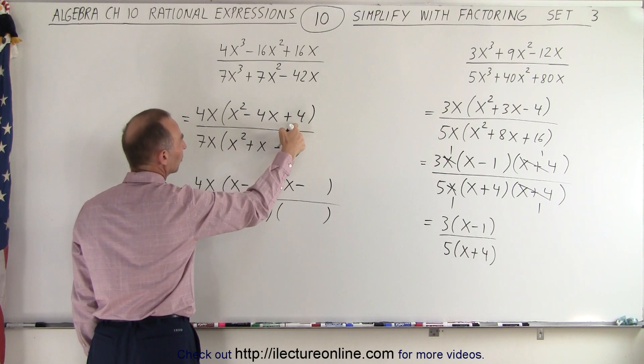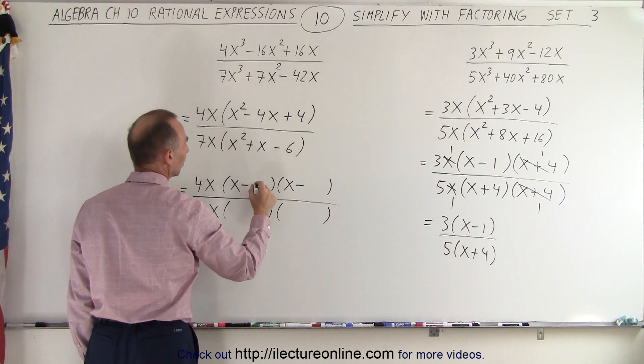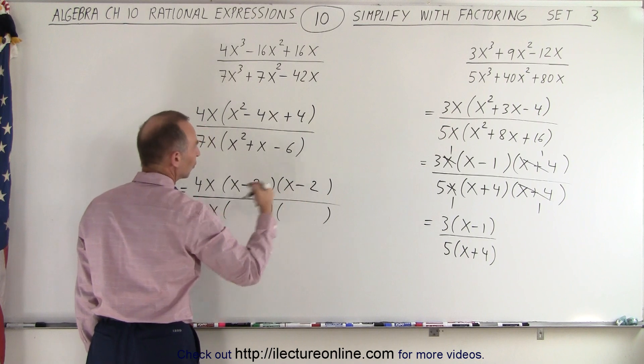And when we multiply, we get a positive 4. When we add, we get negative 4. So that's 2 and 2, or negative 2 and negative 2.